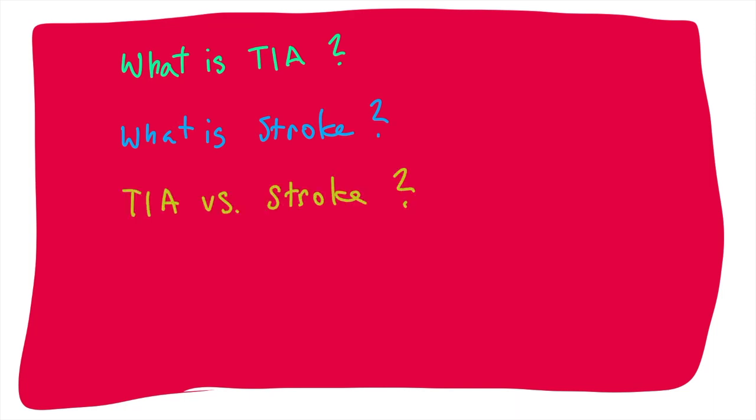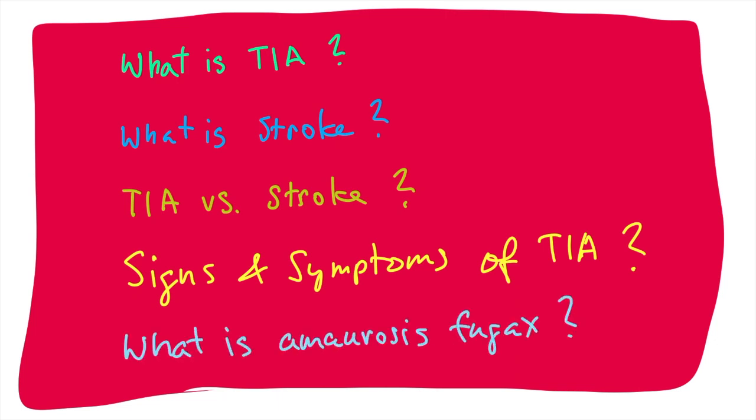Hello and welcome to Coiled. In this lecture we're going to decoil transitory ischemic attack and you're going to learn what is transitory ischemic attack, what is a stroke, what are the differences between transitory ischemic attack and stroke, what are the signs and symptoms of transitory ischemic attack, and what is amaurosis fugax.